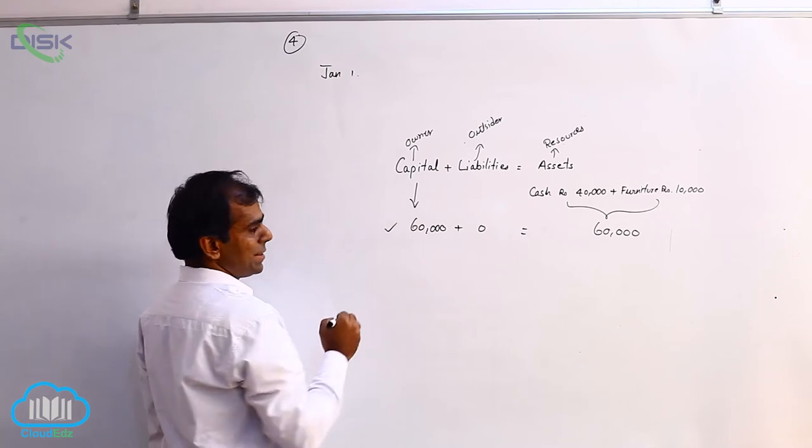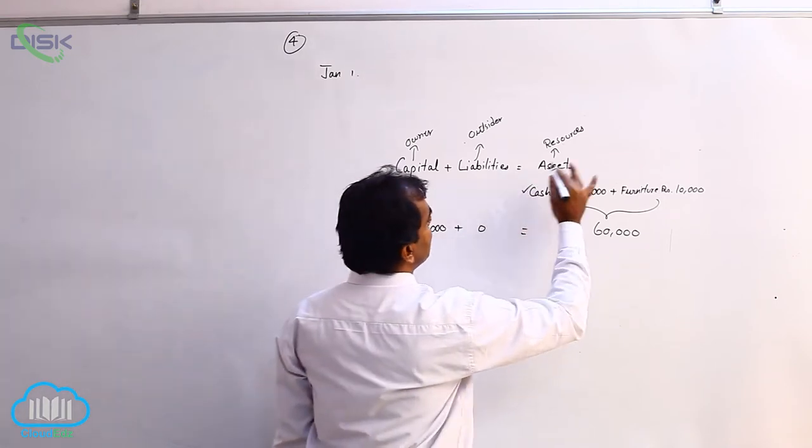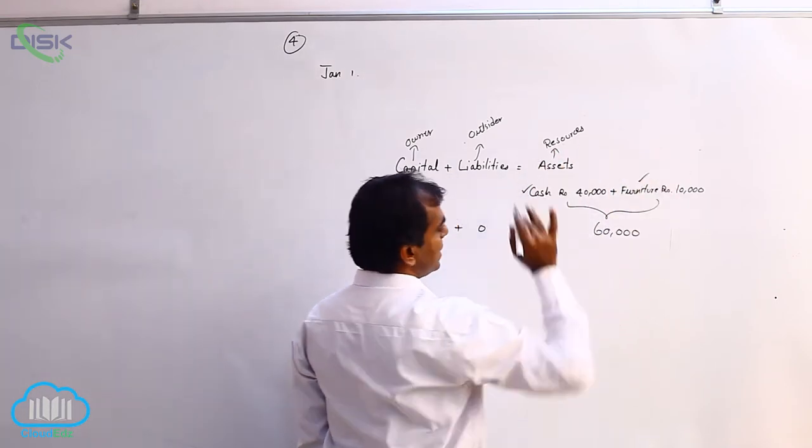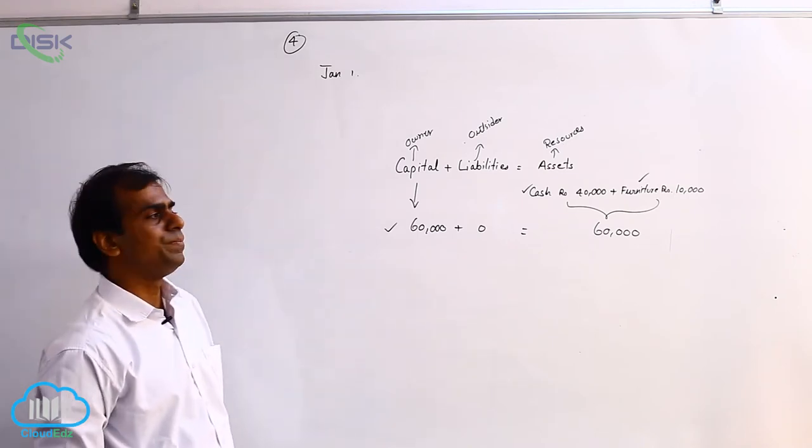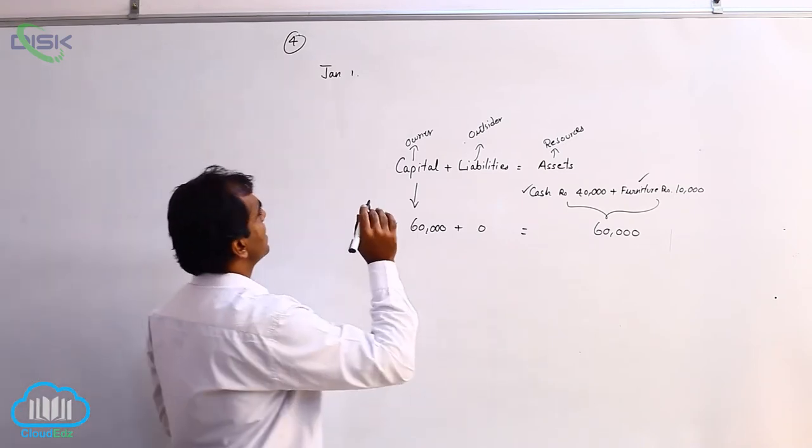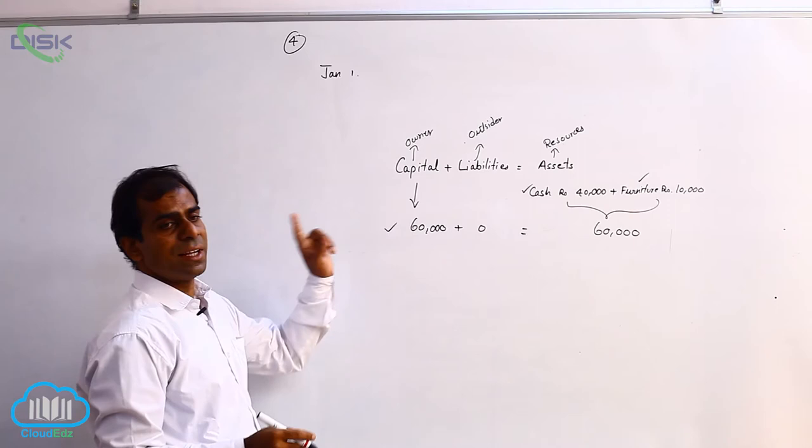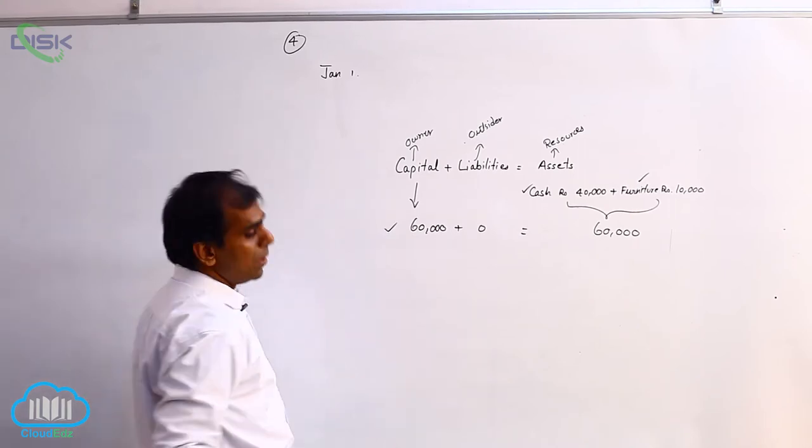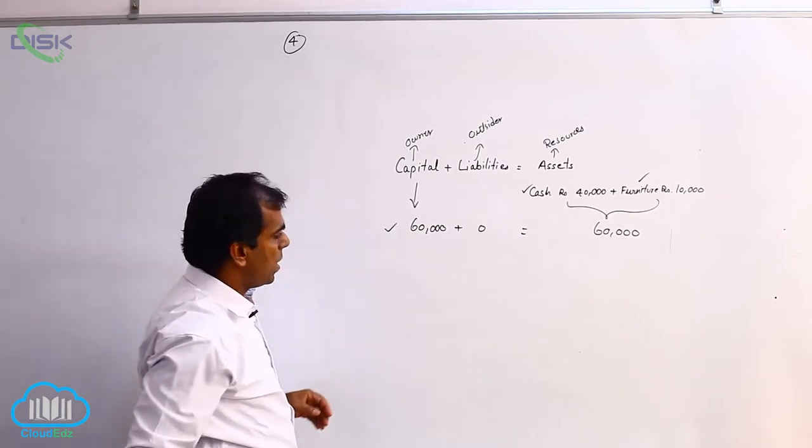So we have capital 60,000 and we have two assets cash and furniture with us. Now cash, the business is getting cash which is a real account. So looking at this, I will be writing the journal down.